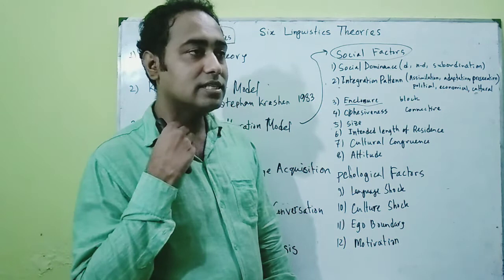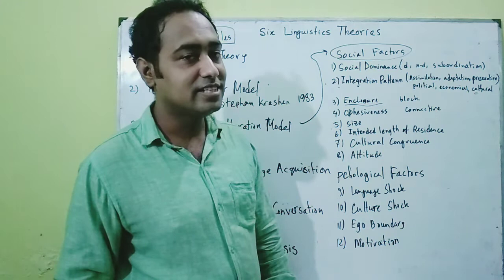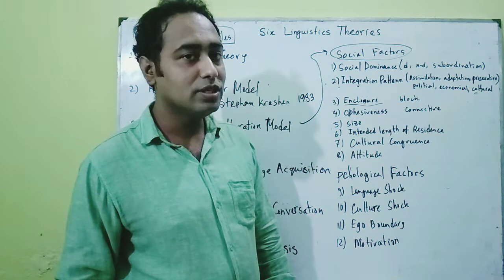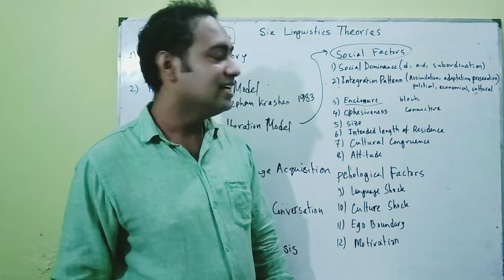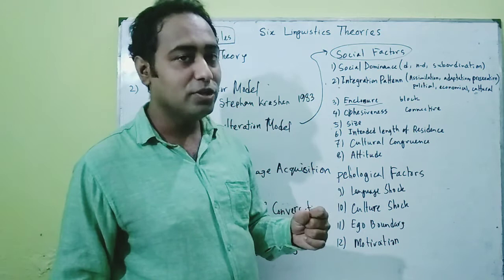The fourth factor is cohesiveness — it means how much connection there is. Suppose a learner went to London and is living with the Bangladeshi community; in that case, his second language learning in English will be less successful. If he does not have communication only with the Bangladeshi community and instead communicates with native speakers, then his learning becomes successful.